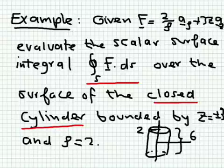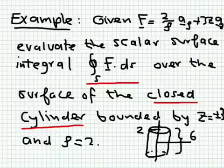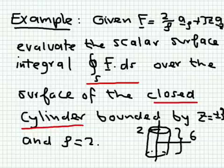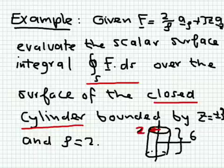We want to get the total current flowing out of that cylinder. The cylinder is bounded by z equal to minus three and z equal to plus three, and the radius rho is equal to two. So two is the radius of the cylinder while the height of the cylinder is six, spanning from minus three to three.